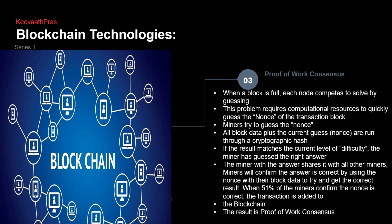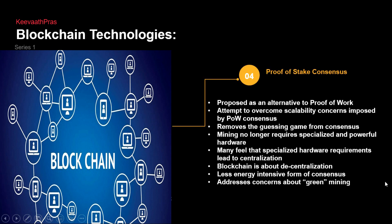With proof of work — when a block is full, each node competes to solve a problem by guessing, which requires computational resources. That's the nonce we talked about — miners try to guess the nonce, everything done in sequential manner. If the result matches the current level of difficulty, the miner has guessed the right answer. The miner with the answer shares it with all miners, and miners confirm whether the answer is right or not. Any person who gets more than 51 percent agreement gets it declared and added. Last lecture we saw you need at least five to six confirmations to say the block is valid — that is the proof of work consensus.